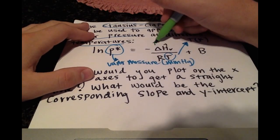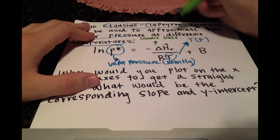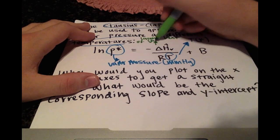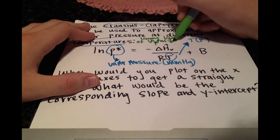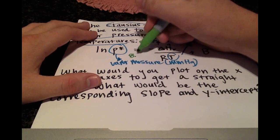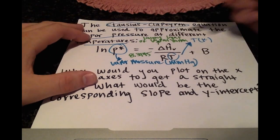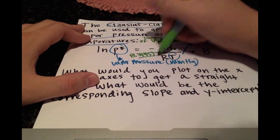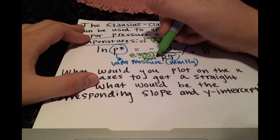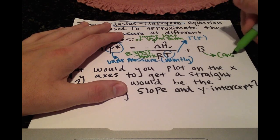This is the latent heat of vaporization. And our R is just the constant, 8.3145, and that's going to be in joules per mole Kelvin. And this b is just another constant.